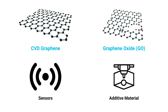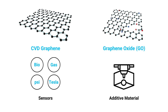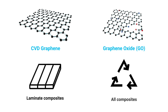CVD graphene has wide application potential in sensors due to its great electrical properties, including biosensors and sensors that detect pressure, gas concentrations, and magnetic fields — operating at increased sensitivity levels and developed cost effectively. Graphene oxide, by contrast, is widely used as an additive material in its three-dimensional powder form, having been added to concrete, asphalt, and a variety of composites to reinforce strength and deliver weight reduction benefits. In the composites world, CVD graphene is really only applicable to laminate-based composites, whereas graphene oxide can be used across almost all composites.